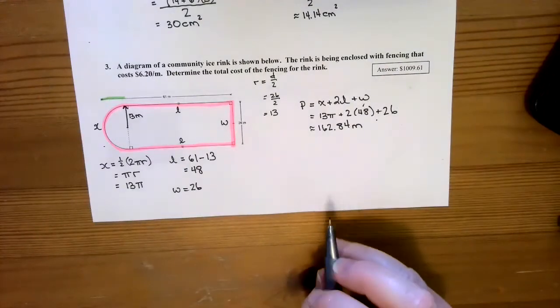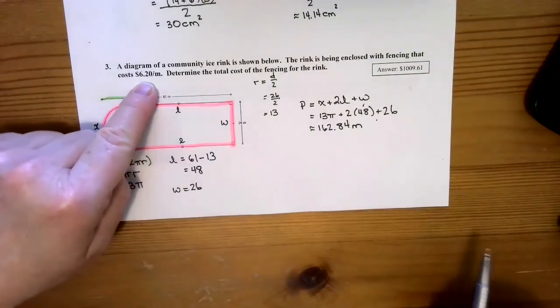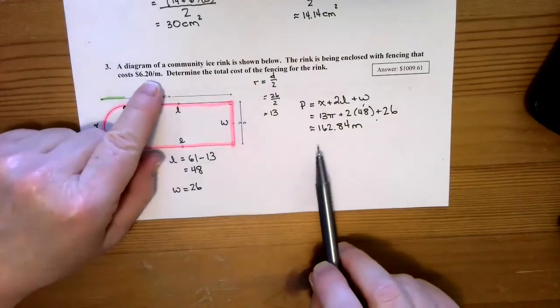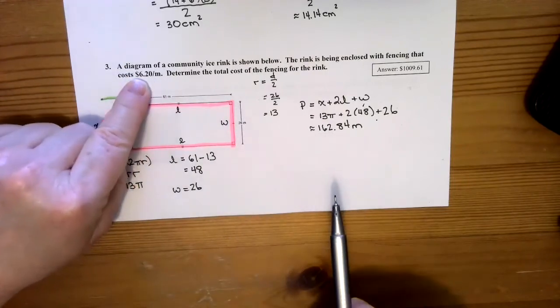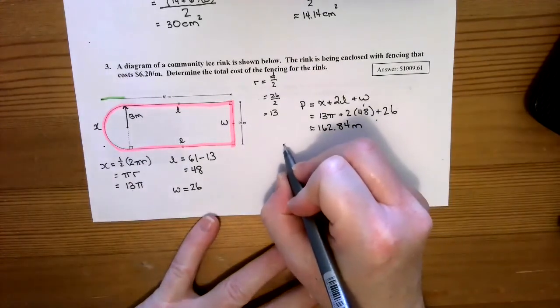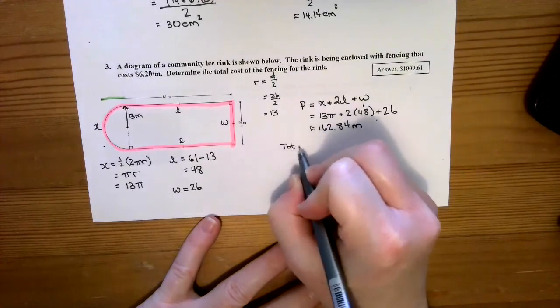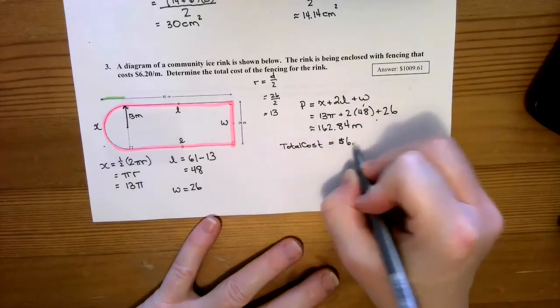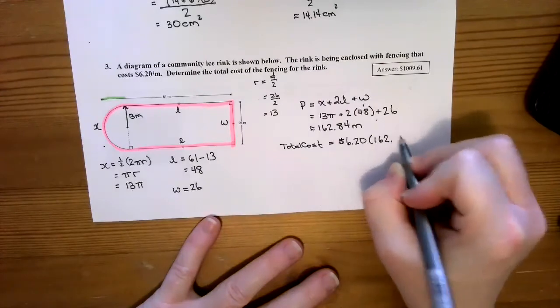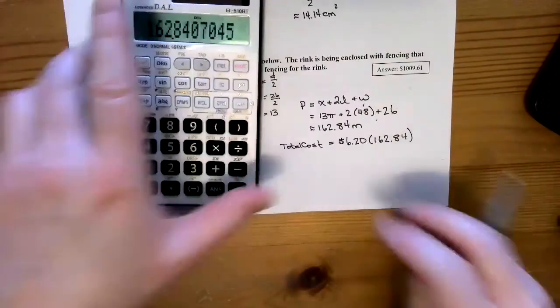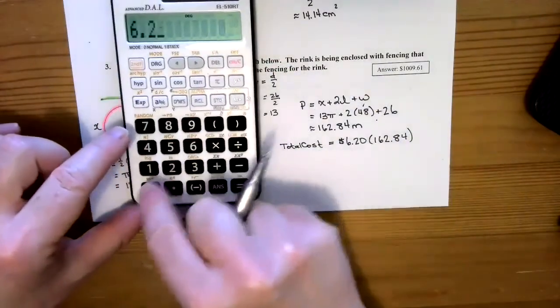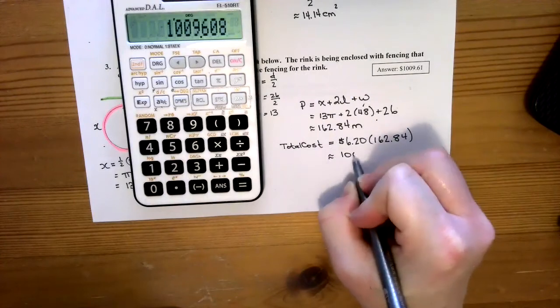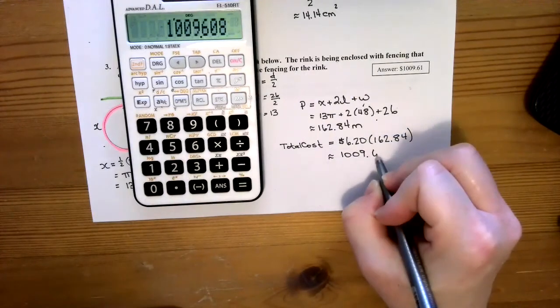I figured out what the perimeter is, so now I know my cost. My cost is $6.20 per meter. That means if this is the length of fence I'm going to need to do the whole outside, then I would take the length of the fence and multiply it by the cost. So my total cost is going to equal $6.20 times my perimeter, which is 162.84. So $6.20 times 162.84 is approximately equal to $1,009.61.